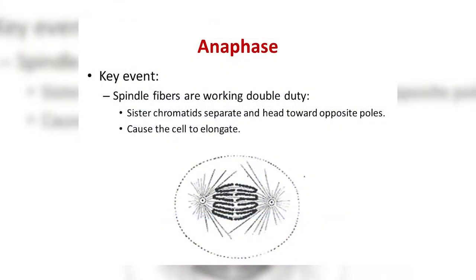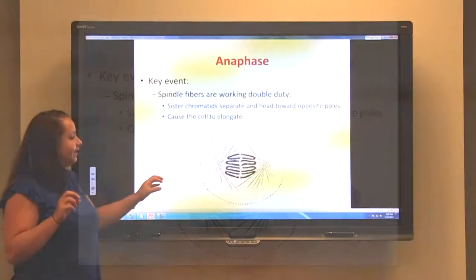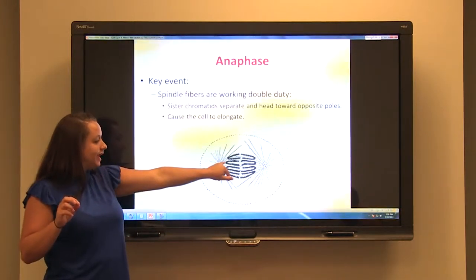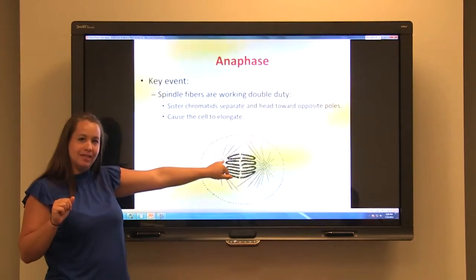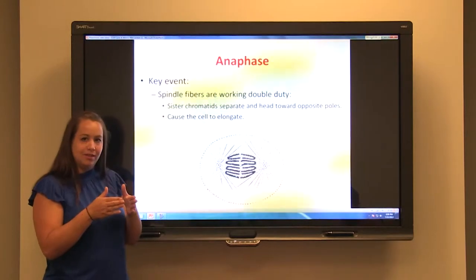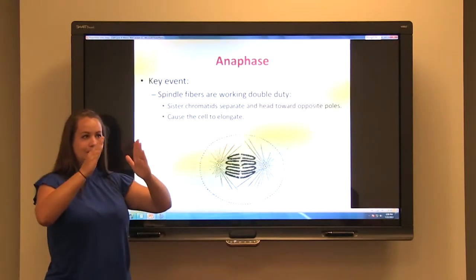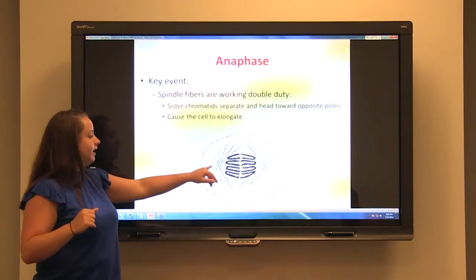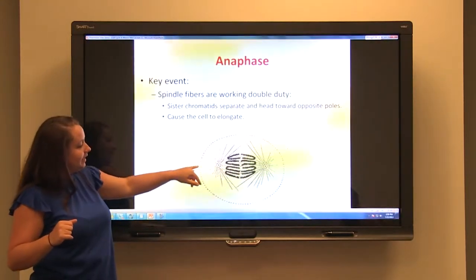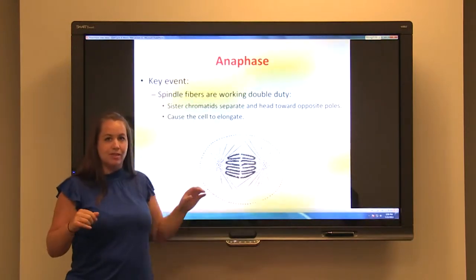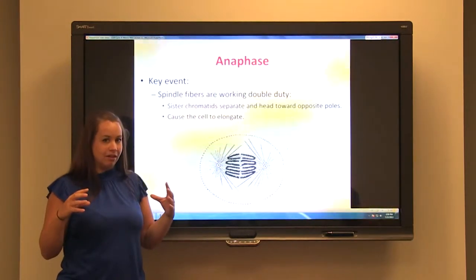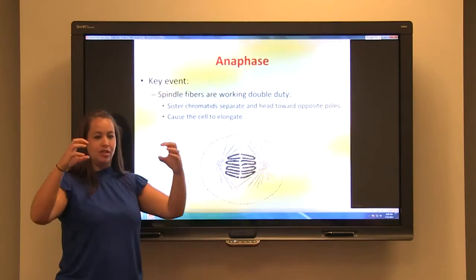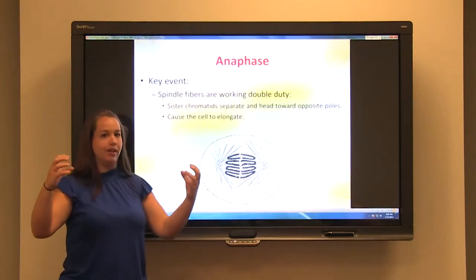The next phase is anaphase. During anaphase, your spindle fibers work double duty. The piece of spindle fiber attached to the center of the sister chromatid begins to shorten, which separates the chromosome into two individual chromatids moving to opposite poles. The second part of the spindle fibers extends outward at the poles, which elongates the cell, and this elongation creates two separate areas for nucleic material.